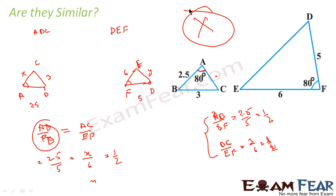We are not very sure that they are similar. In this example, we have 2.5, 5, 3, and 6 — but still we can't say that they are similar. For the SAS rule, the side, the corresponding angle, and the corresponding side all have to be proportional. This angle equals this angle, but the corresponding sides are not confirmed proportional. So if AC were equal to 3 they would be similar, but since it is not given, we can't say whether it is similar or not.